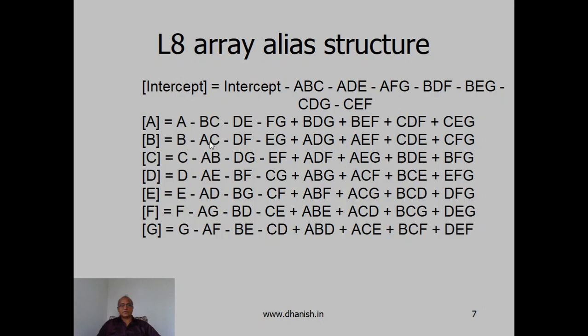Similarly, B is aliased with AC or DF or EG. C is aliased with AB or DG or EF. And D is aliased with AE or BF or CG. Now, suppose we allocate factor A to this column, factor B to the second column, and the third factor is allocated to C, then C and AB will be mixed up. We cannot distinguish whether the effect of C is due to C or interaction AB.